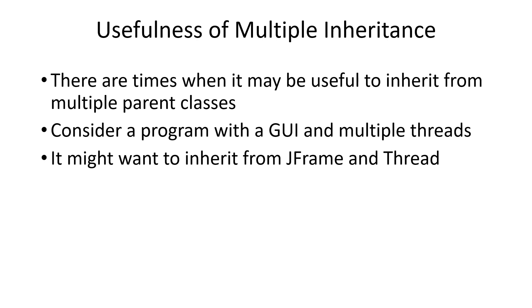This can be particularly useful if a class needs the features of two different classes. For instance, imagine you're creating a program that has a GUI — a graphical user interface — and will support multiple threads. You might want to inherit from the JFrame class to get all the GUI features, and also inherit from the Thread class to get all the multiple threading features. In Java, you can't do both, but in other languages you might be able to inherit from both classes.